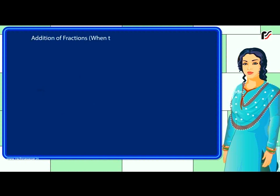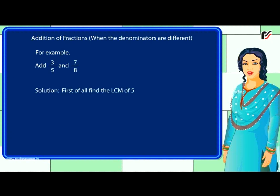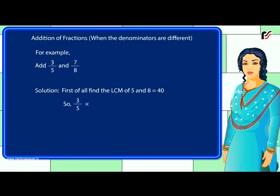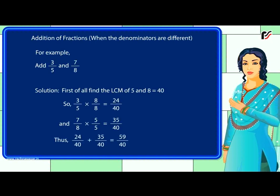Addition of fractions when the denominators are different. For example, add 3 by 5 and 7 by 8. Solution: first find the LCM of 5 and 8, which equals 40. So 3 by 5 becomes 24 by 40, and 7 by 8 becomes 35 by 40. Thus, 24 by 40 plus 35 by 40 equals 59 by 40.